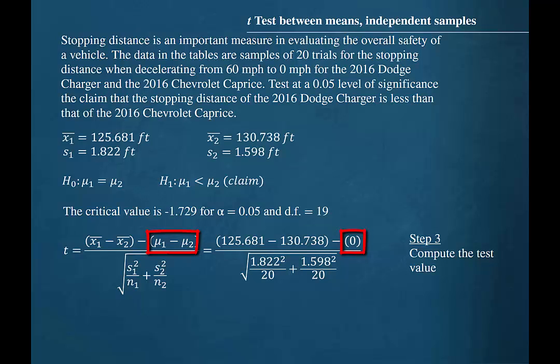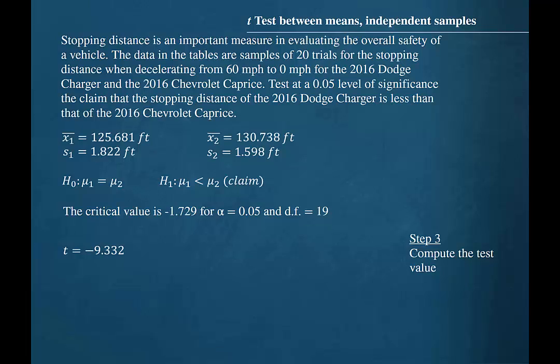It is important to understand that in the null hypothesis, if the population means are assumed equal, then their difference would be 0. Evaluating this formula, we find a t-test value of negative 9.332.